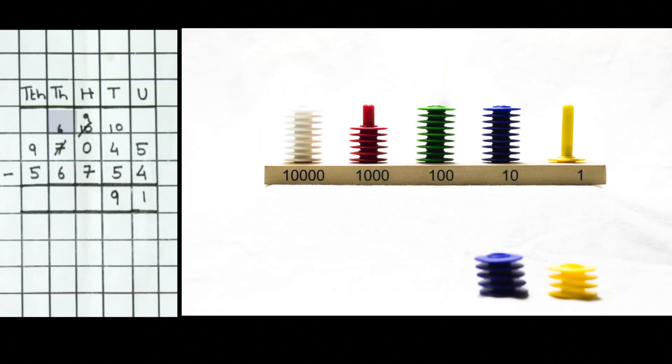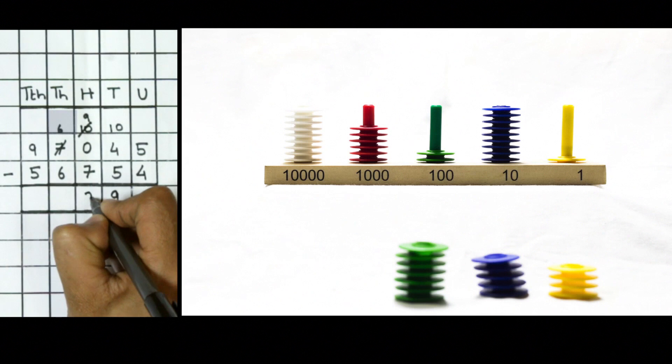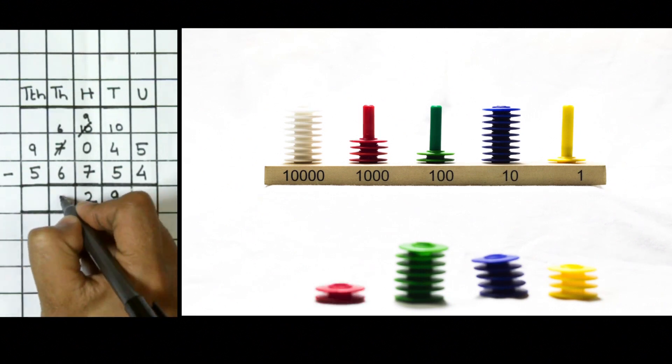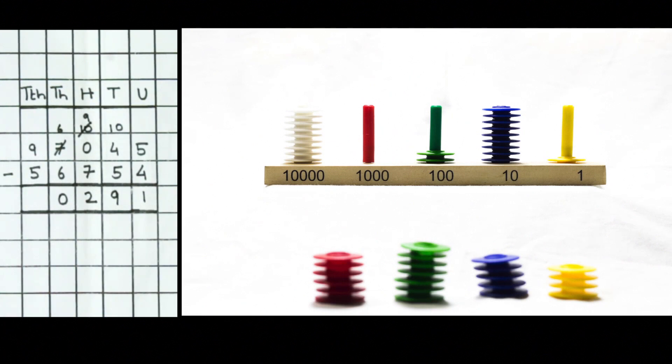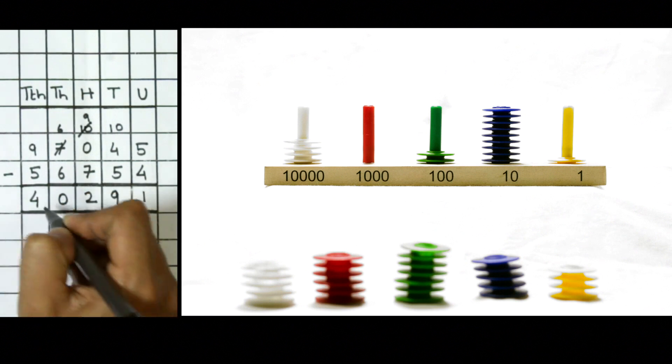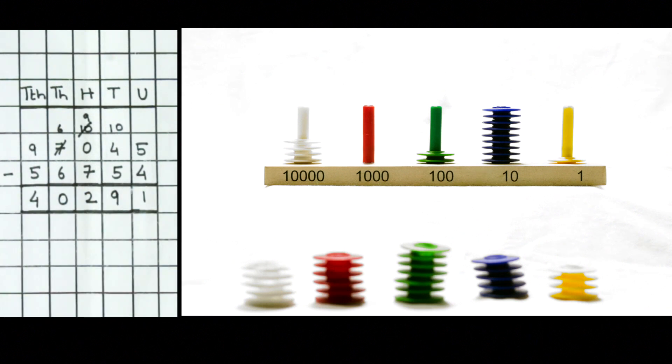Move one step to the left. Take away seven hundreds and keep aside. Two rings of hundred remain on the abacus. Again move one step left. Six thousand minus six thousand leaves no rings of thousand on the abacus. Finally, take away five ten thousands from nine ten thousands.